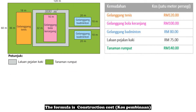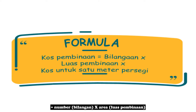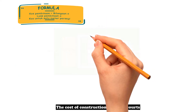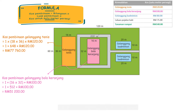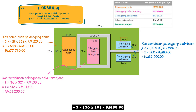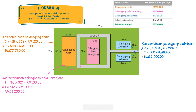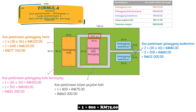To calculate the whole playground cost using Teknik Leraian, calculate each facility one by one. Formula: Cost pembinaan = bilangan × luas pembinaan × cost untuk satu meter persegi. Cost of tennis court = 1 × 18 × 36 × RM120 = RM77,760. Cost of basketball court = 1 × 16 × 32 × RM100 = RM51,200. Cost of 2 badminton courts = 2 × 20 × 10 × RM18 = RM32,000.